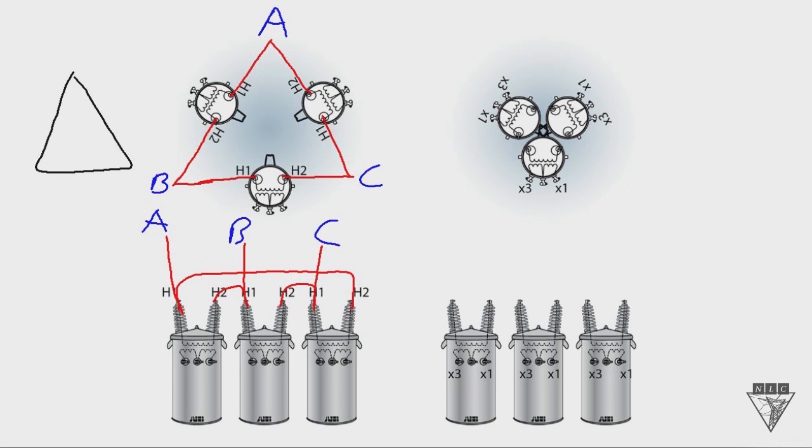On the secondary side we want to tie the X3s and the X1s together all the way around and look at what shape it makes when we do that. Once again it gives the shape of a triangle. Make it look like a triangle. There we go. Which once again that's the Greek letter for delta is a triangle. That's where it gets its name.